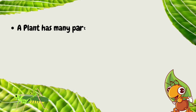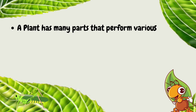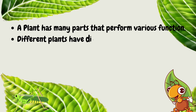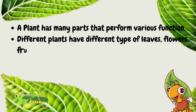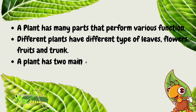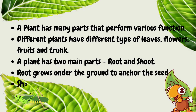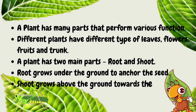A plant has many parts that perform various functions. Different plants have different types of leaves, flowers, fruits and trunk. A plant has two main parts: root and shoot. Root grows under the ground to anchor the seed. Shoot grows above the ground towards the light.